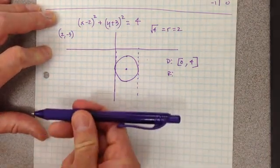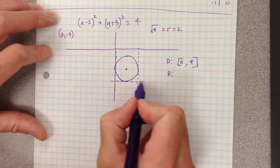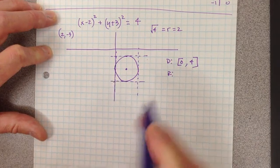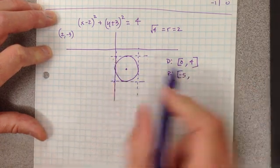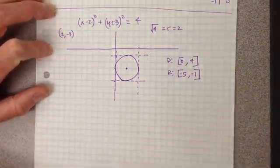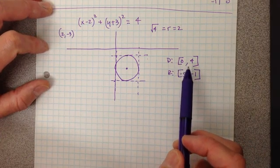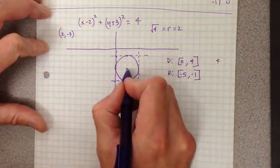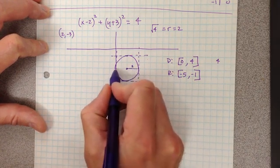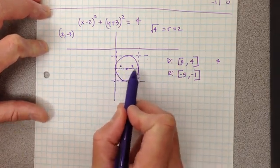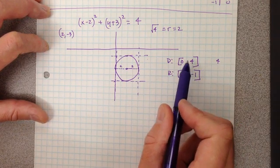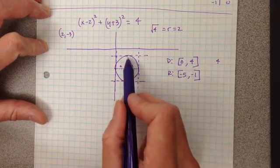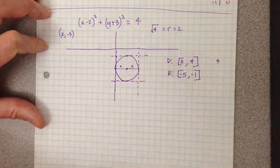Range is similar, this time working from the bottom up. I first encounter the graph at y = negative five, and I last hit it at y = negative one. The span of my domain from zero to four is a difference of four spaces. If you think about the radius of two — from the center to one edge is two, and from the center to the other edge is also two — so the diameter of four equals the span of the domain. The same goes for the range: the span from negative five to negative one is also four spaces, which is the diameter across the circle.